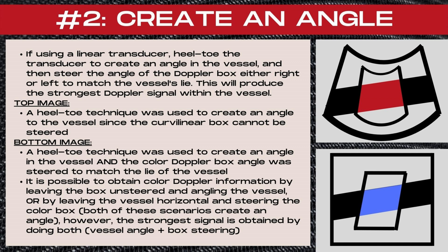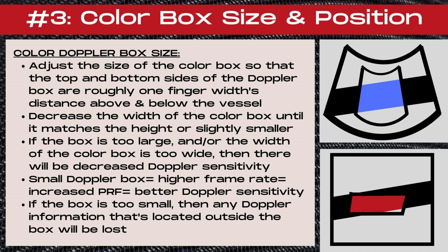It is possible to obtain color Doppler information by leaving the box unsteered — pointing straight down — and angling the vessel itself, or by leaving the vessel horizontal on the screen and steering the color box. Both of these scenarios create an angle. However, the strongest Doppler signal is obtained by doing both techniques: creating an angle with the vessel and steering the box.